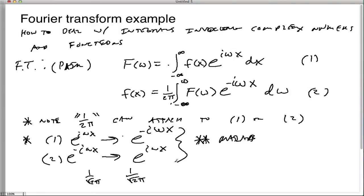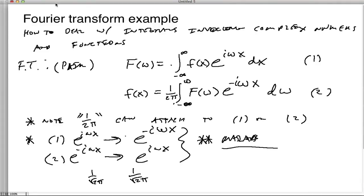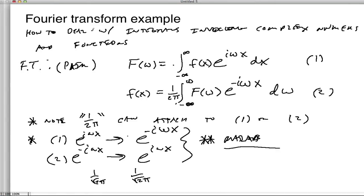They actually split the 2 pi into two pieces, and they'll put a 1 over root 2 pi both here and here to make a greater symmetry. It really depends on the textbook you're looking at and also the numerical package that you might be using to do computations or any kind of software. So you just have to always check the documentation to make sure you're using the Fourier transform that they've used as a convention.